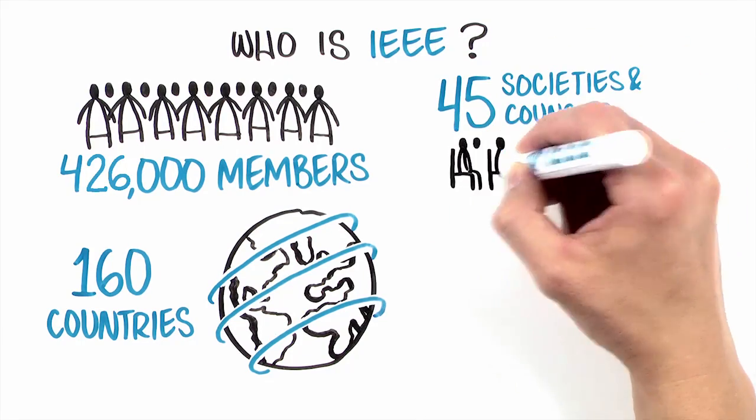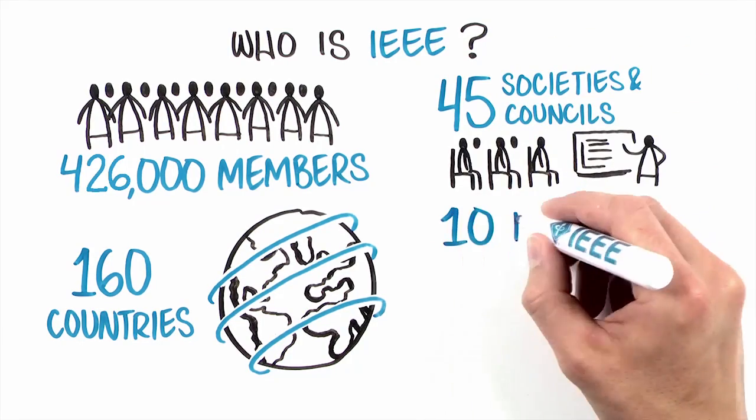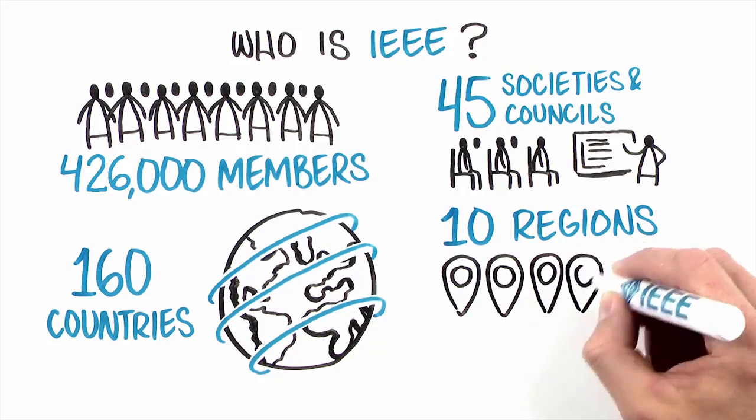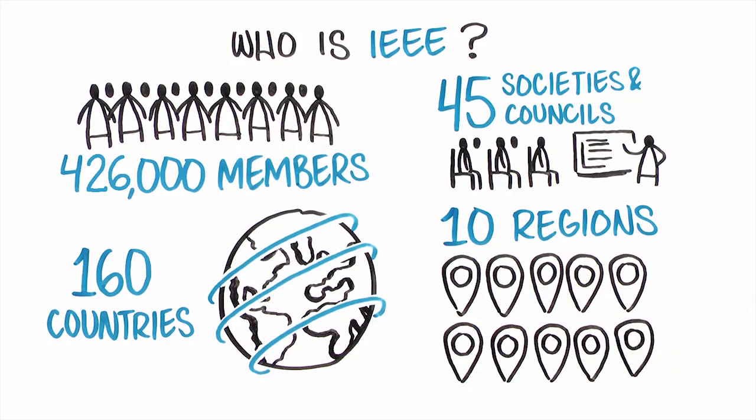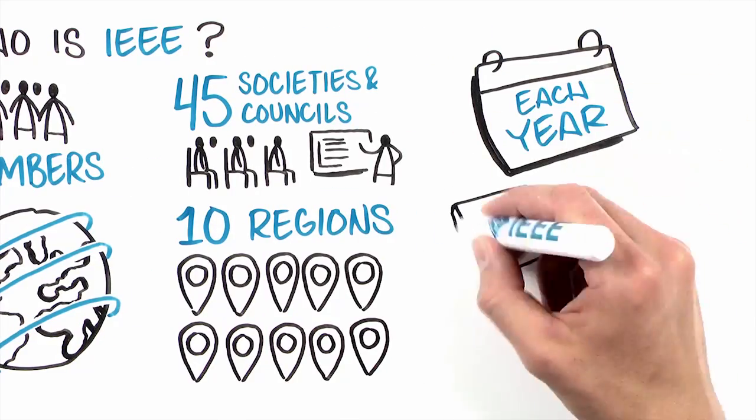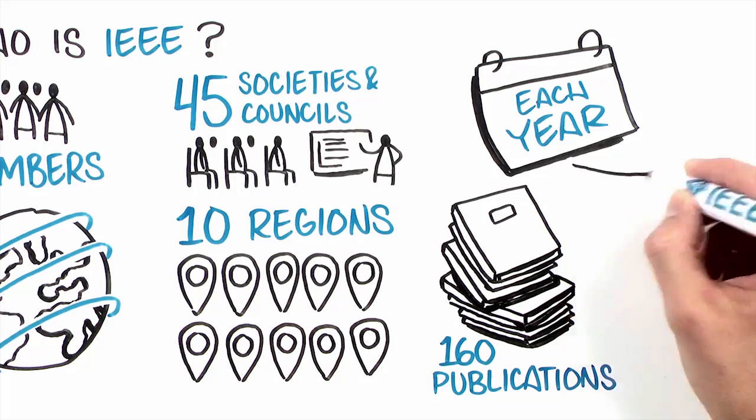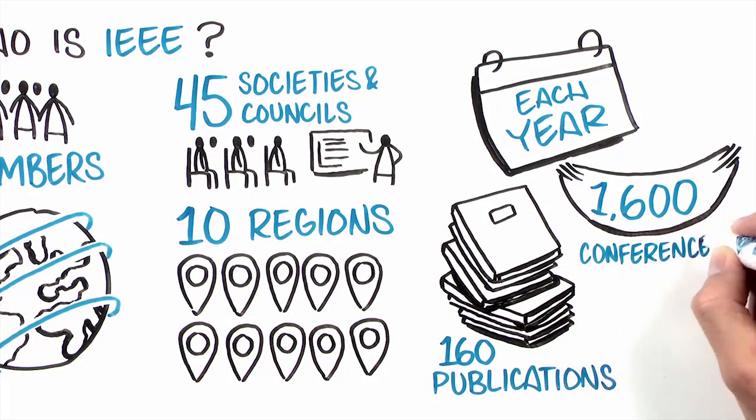We have 45 societies and technical councils and 10 geographic regions supporting our worldwide technology community. And each year, we publish over 160 publications and hold more than 1,600 conferences.